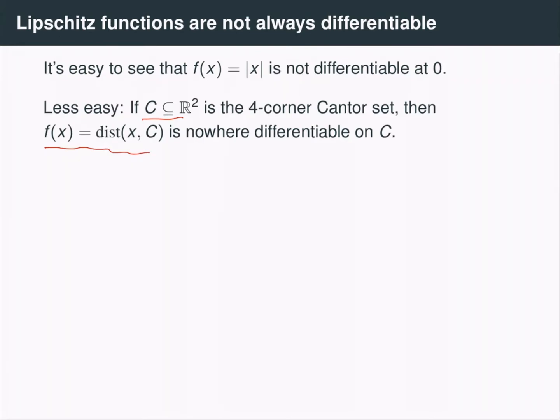It's not hard to show that this is Lipschitz and also that it's nowhere differentiable along the Cantor set. And essentially the reason why is that if you look at the Cantor set and you look at the distance function, you notice that as you move along a line, the distance to the Cantor set is going to oscillate a lot.